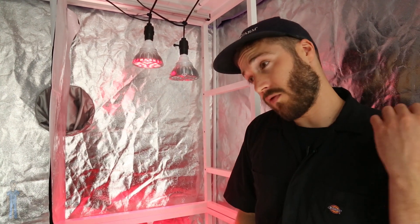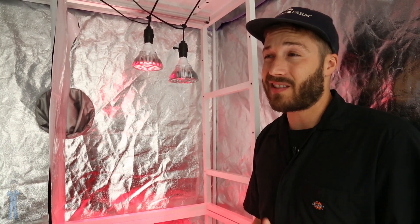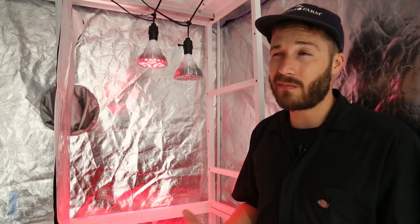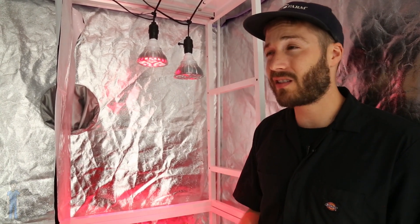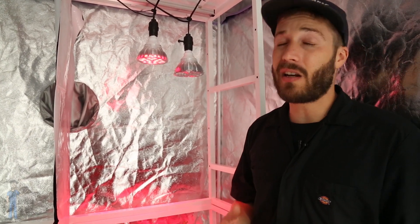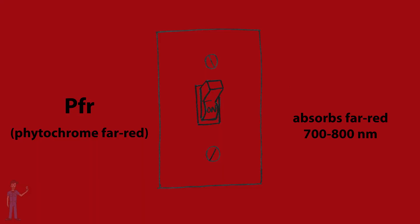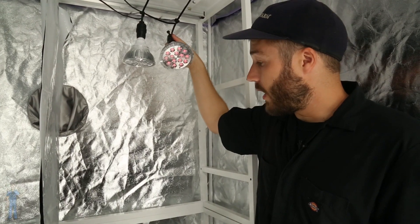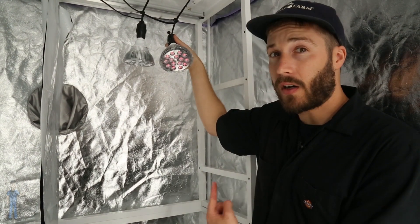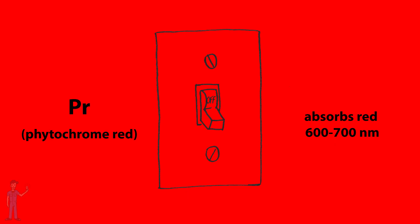In its active PFR form, phytochrome can regulate a bunch of plant processes. This is technically the on position, PFR, and when it's in PFR it's ready to absorb far-red light. When PFR absorbs far-red light, it changes back to the off position, which is PR.